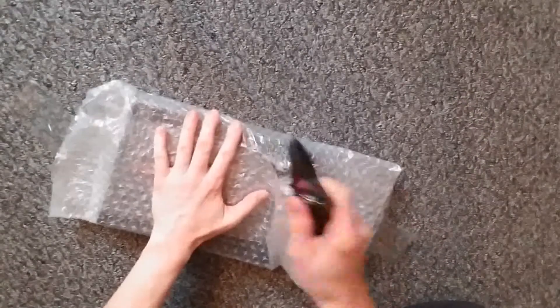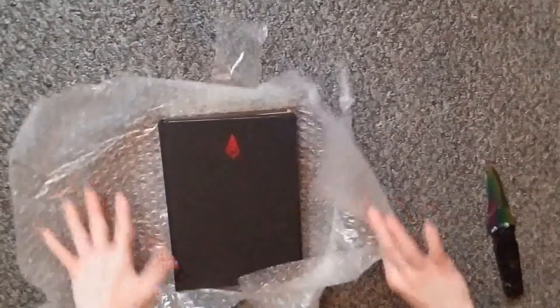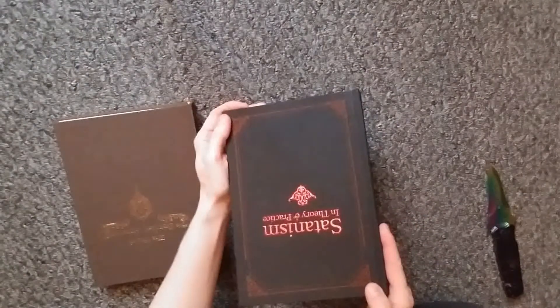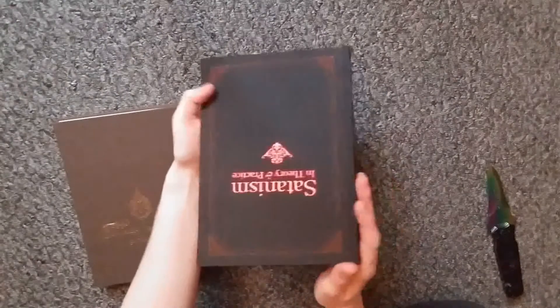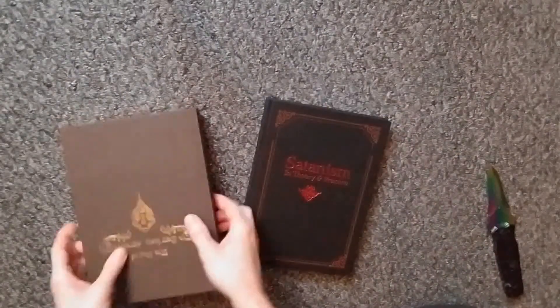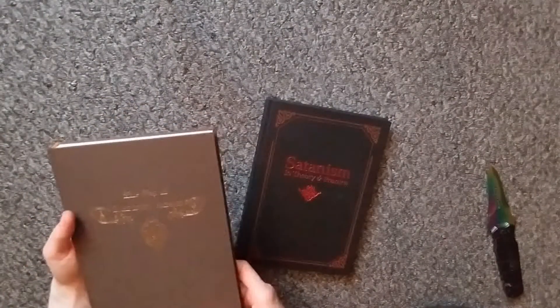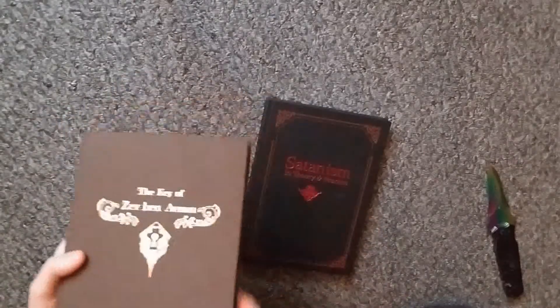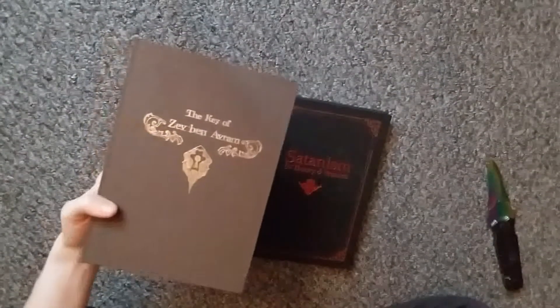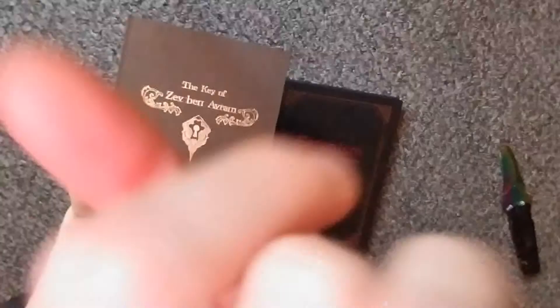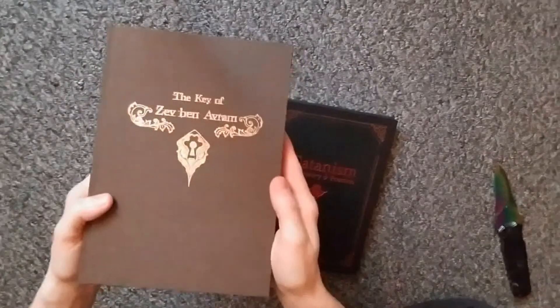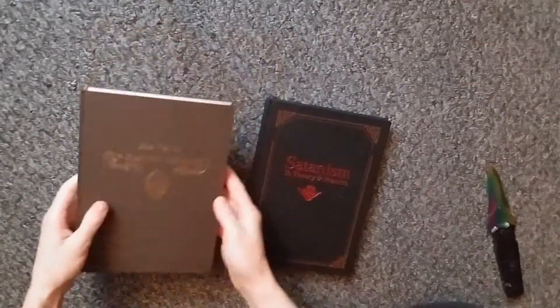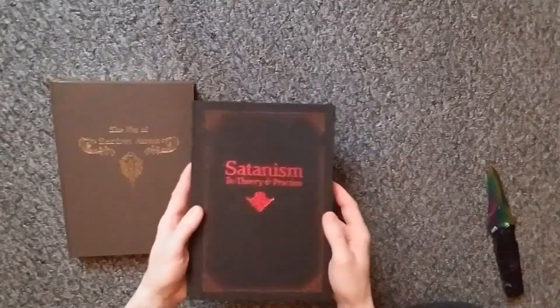I packaged this for you. It's a copy of Satanism in Theory and Practice, as well as the Key of Zev Ben Avram. I guess I'm recording these upside down in my selfie camera, so I gotta try to figure out how I should show these to you. I guess I'm gonna flip this around before I post it. So let's start with this one. These are both published by Fall of Man.